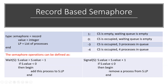In this record-based structure, there are multiple processes and some value variables that are used as a shared variable. The value variable represents the shared variable, and the critical section is accessed based on this value. We then apply the wait and signal operations to this record-based semaphore structure.